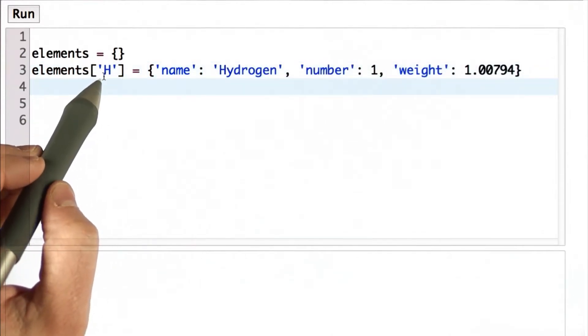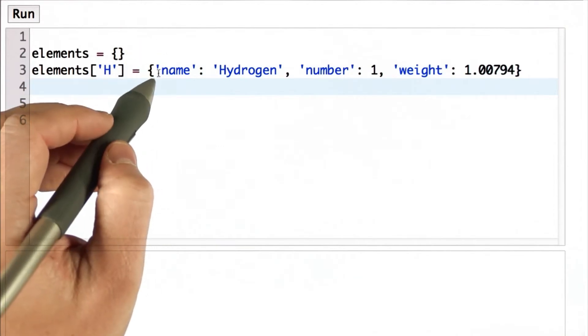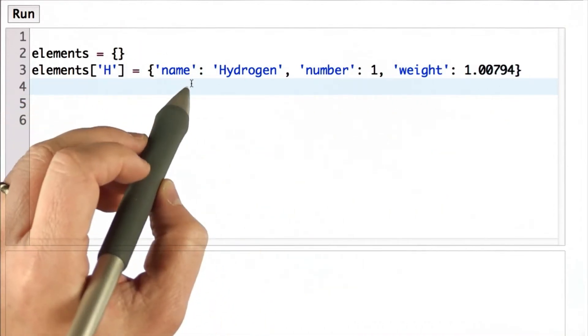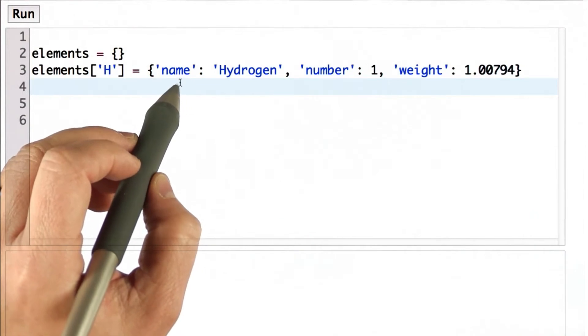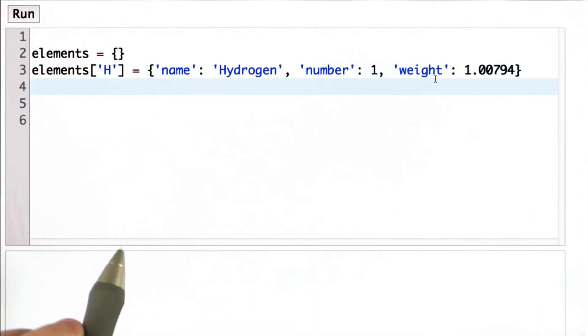The key is the single letter h, and it has as its value a dictionary that has three entries with the key name, number, and weight, and values associated with each of those. That could be different types. Name is a string, which gives the full name of the element.